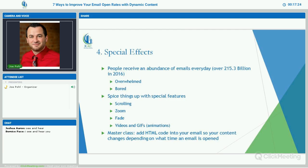Masterclass level: add HTML code into your email so your content changes depending on what time an email is opened. A few major corporations are doing this. Basically, you open an email and then a few hours later you open it again and the content has changed — it has more up-to-date news articles. That's why I put Masterclass there, it's a little more complicated. Unless you're an email marketing specialist, you can always get a freelancer to incorporate this so that each time a real estate agent opens your emails, there will be different news articles, tips, or blog articles that keep changing hour-to-hour or day-to-day.